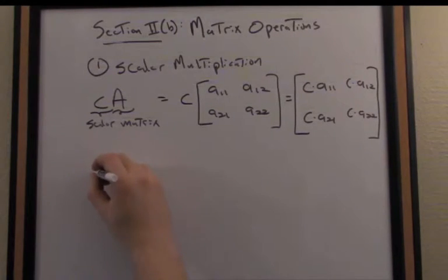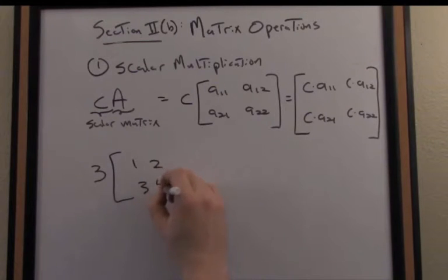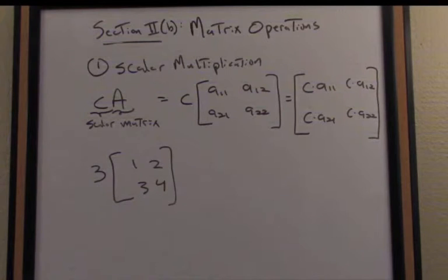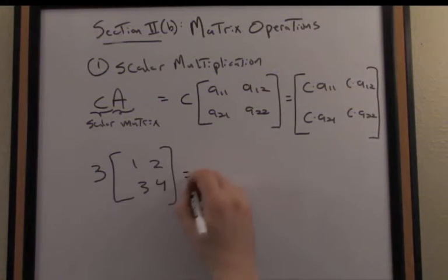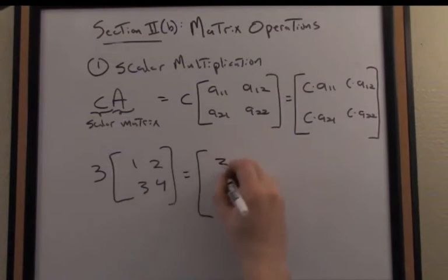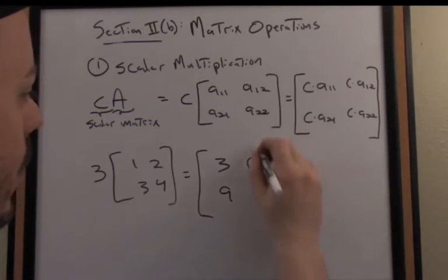Let's see that with a simple example. A nice 2x2 matrix, say the matrix 1, 2, 3, 4. I want to scale that by the value 3. What do I do? I simply distribute the scalar component to each of the entries in the matrix. So 3 times 1 is 3, 3 times 2 is 6, 3 times 3 is 9, and 3 times 4 is 12.